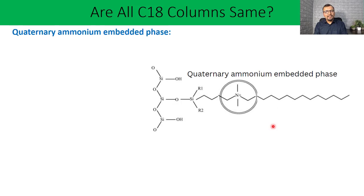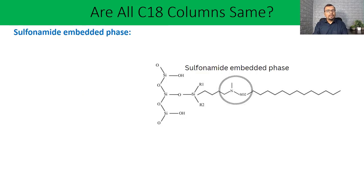Quaternary ammonium embedded phase also has positive charge onto the stationary phase, and this helps in retaining some ionic or anionic functional groups. So Stability BS C23 non-endcapped or Stability BS C23 endcapped are commercial examples of this stationary phase. The next polar group is sulfonamide, and this is the commercial example of the sulfonamide embedded C18 stationary phase, which is Acclaim Polar Advantage.